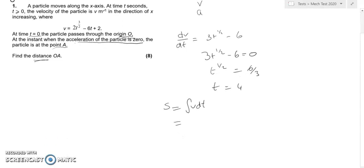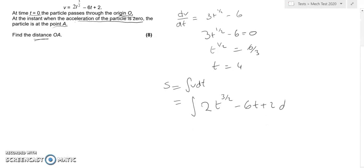If we integrate 2t to the power 3/2 minus 6t plus 2 with respect to t, we get 2t to the power 5/2 divided by 5/2 minus 6t squared over 2 plus 2t plus c.